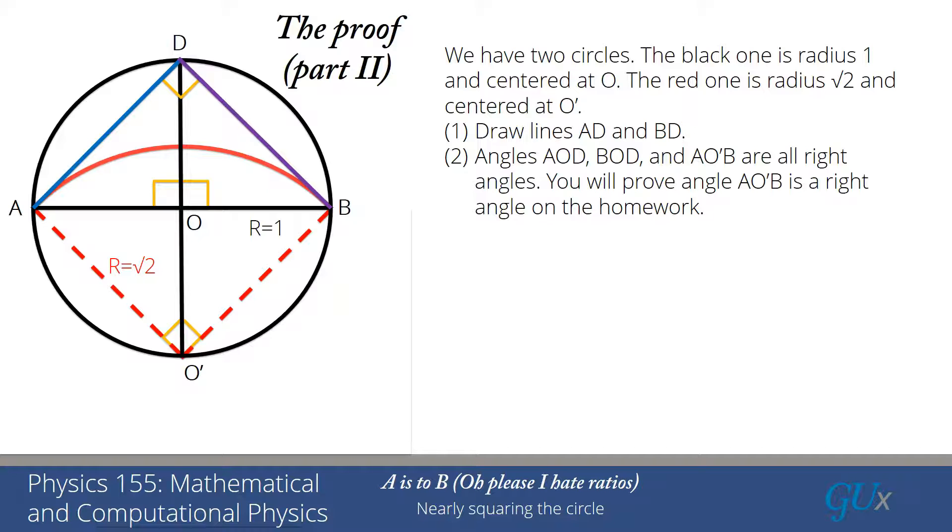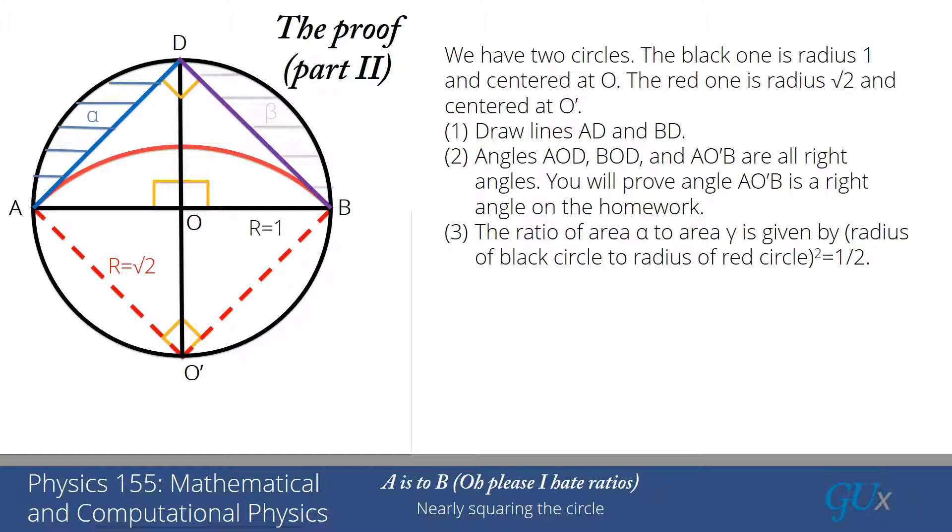Step three, the ratio of the areas of these regions between the circle and the chords, and there are three different ones, one labeled alpha, one labeled beta, and one labeled gamma. The ratio of the area of alpha to the area of gamma is equal to the ratio of the squares of the radii.